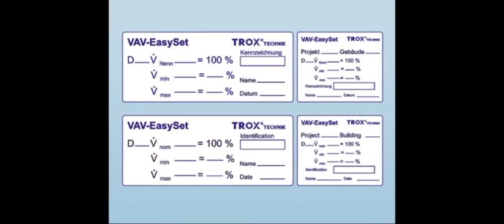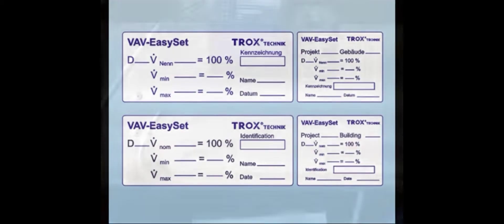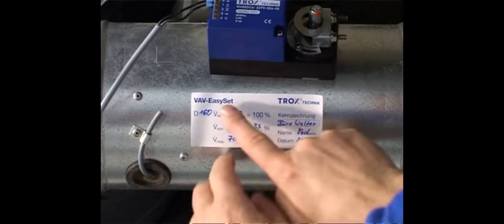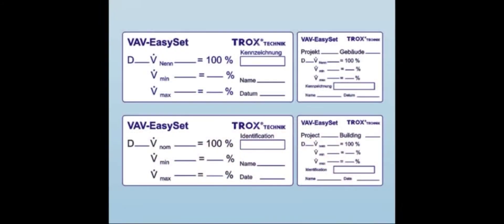In order to document the refurbishing, the VAV Easy-Set contains two sets of labels. The larger label can be attached directly on the controller. The smaller label is used to document the refurbishing in the documents.